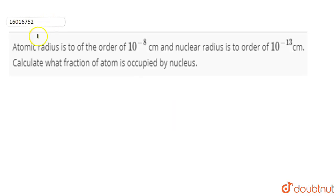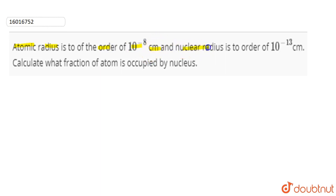Hey guys, the question is that atomic radius is of the order of 10 to the power minus 8 cm. The atomic radius is 10 to the power minus 8 cm, and the nuclear radius is of the order of 10 to the power minus 13 cm.